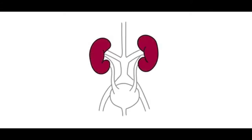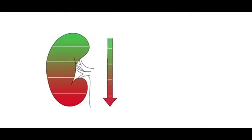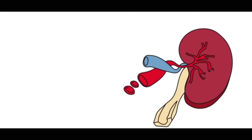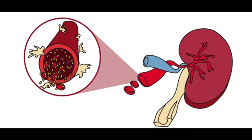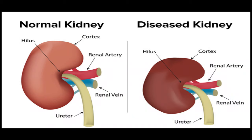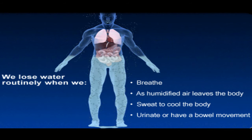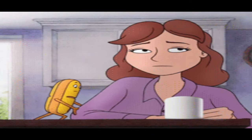Kidney failure occurs when the kidney loses the ability to sufficiently filter the wastes from the blood. This may lead to a build-up of unfiltered content in the blood and may eventually lead to death. Kidney failure may occur due to acute and chronic diseases, kidney trauma, severe dehydration, certain medications and toxic exposure.